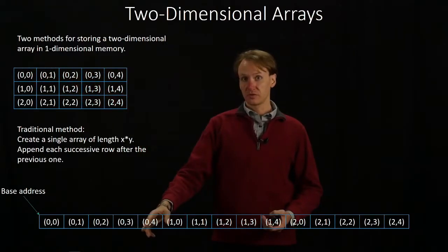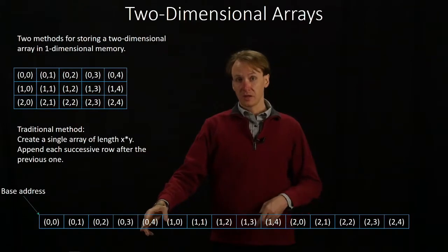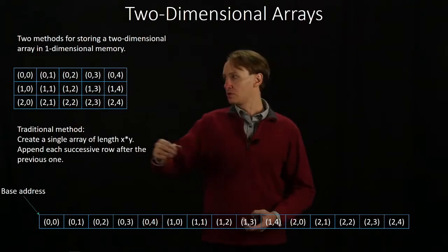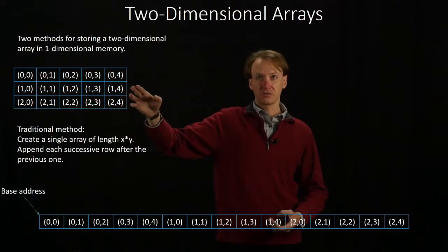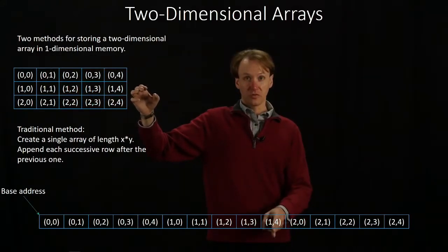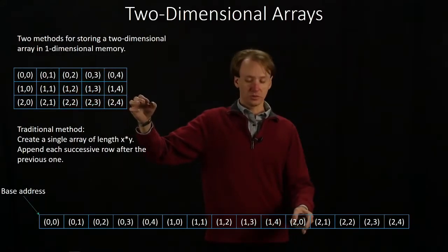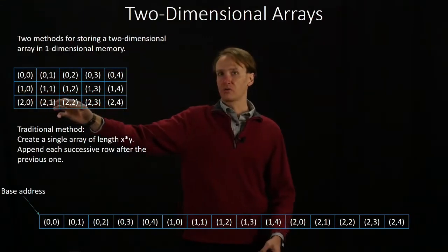But once I get to the end of the first row, then I'm going to go on to the second row. I'll start with 10, and I'll work my way across the second row. Once I get to 14, then I'll start over again with 20 and work my way across the third row.